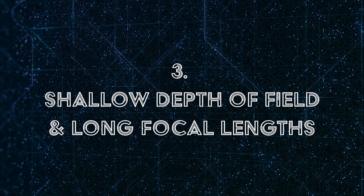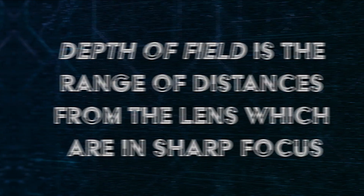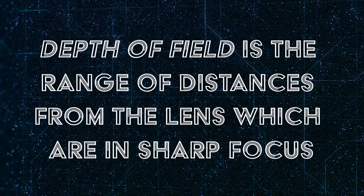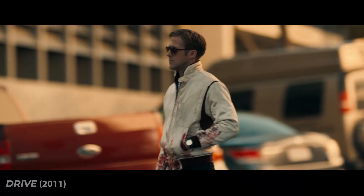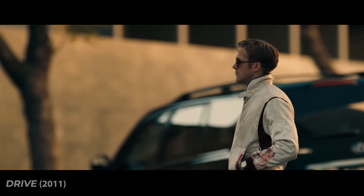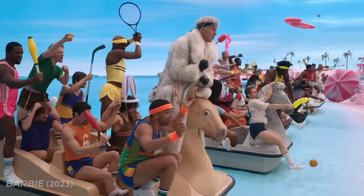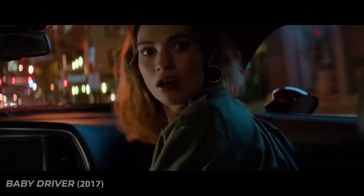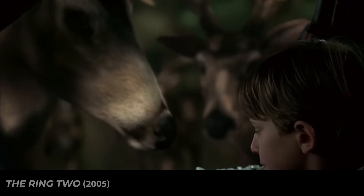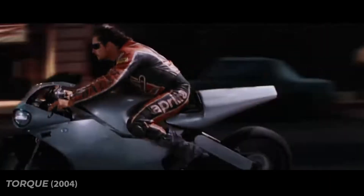Now let's move on to our last common mistake, which is using super shallow depth of field or excessively long lenses. These two aspects go hand in hand because depth of field is directly impacted by focal length. Depth of field is the range of distances from the lens which are in sharp focus. Shallow depth of field means a narrow range of distances are in focus, while deep depth of field means a large range is in focus. Shallow depth of field can produce bokeh — what you see when there are out-of-focus lights in the background of a shot. However, I see a lot of VFX artists taking this effect to the extreme and using unrealistic or simply impractical levels of shallow depth of field.